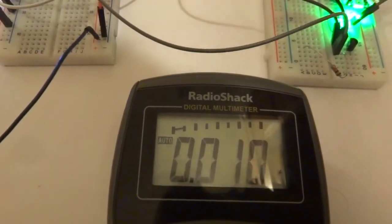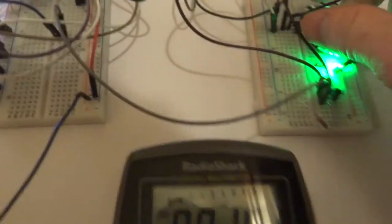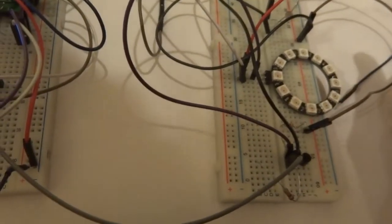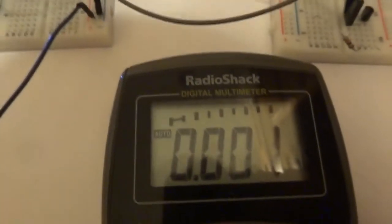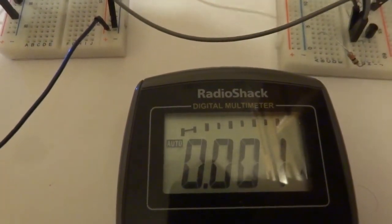But when I'm using a different method with a transistor and I put it to the transistor method, here you can see it's only using 0.001 amps, which is very insignificant.